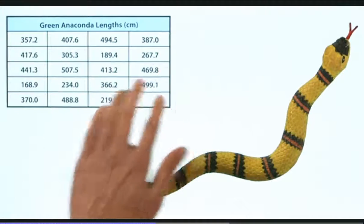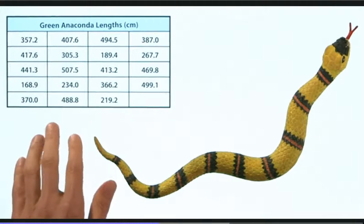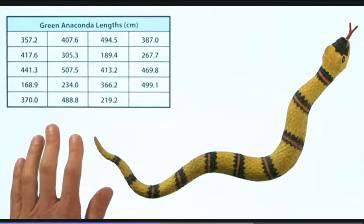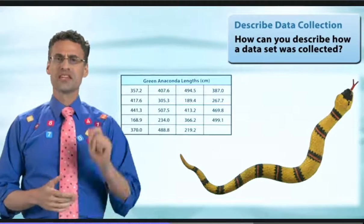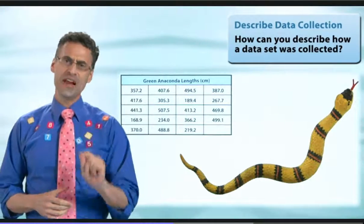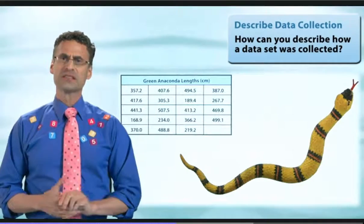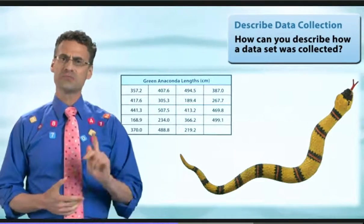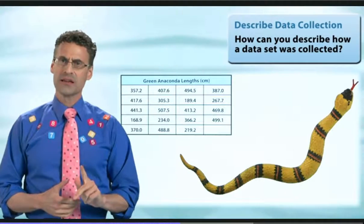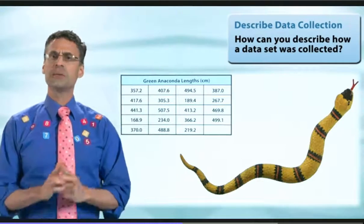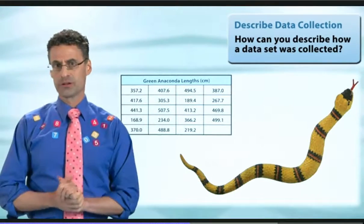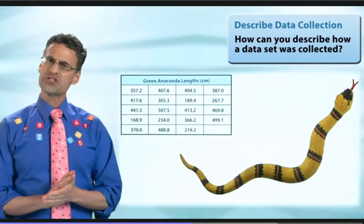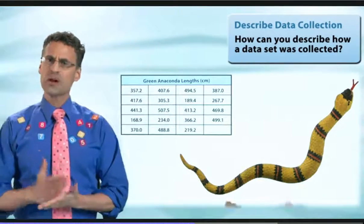These are the various lengths of green anacondas. What I want us to do is to name the attribute that the biologist was measuring, and then describe how the biologist measured this attribute.